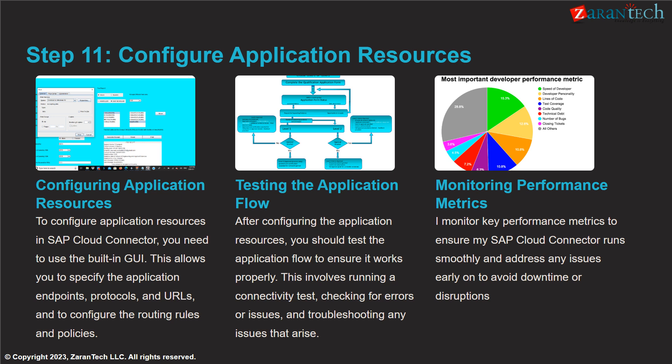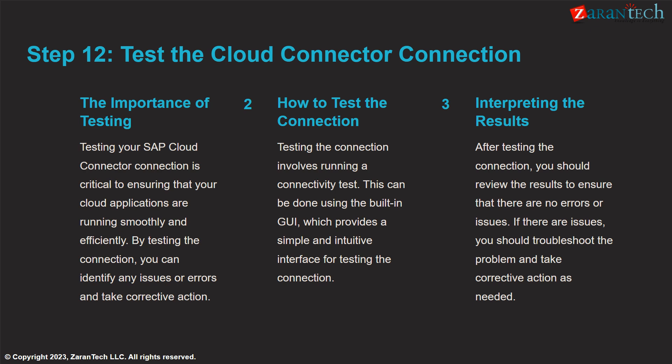Configure application endpoints, protocols, URLs and routing rules through the GUI. Test the application flow and monitor performance metrics like response time to ensure optimal operation. Testing the cloud connector connection is critical to ensure smooth operation. Use the GUI to run a connectivity test and review results to identify any errors needing troubleshooting.